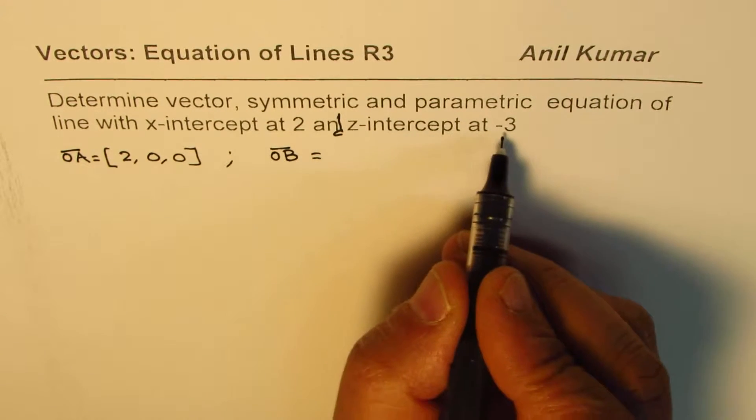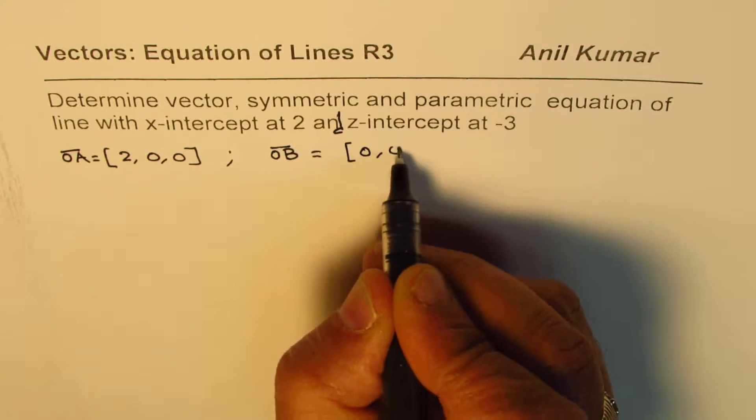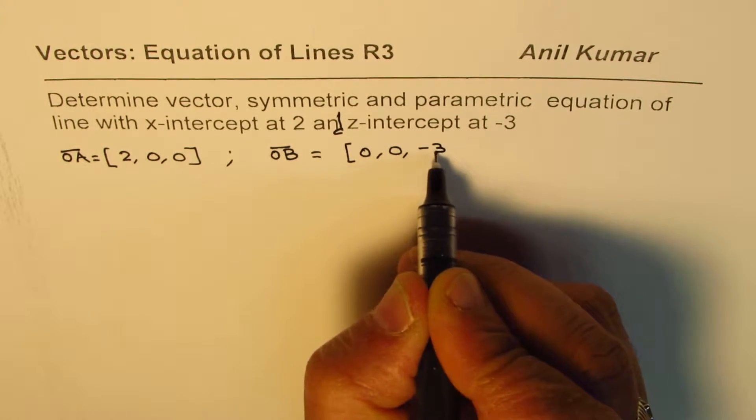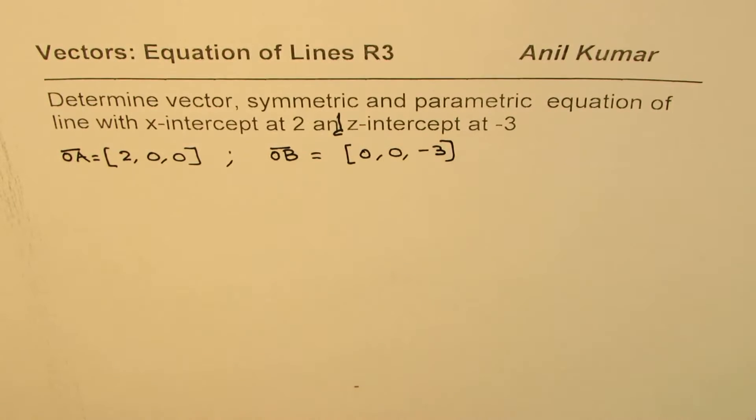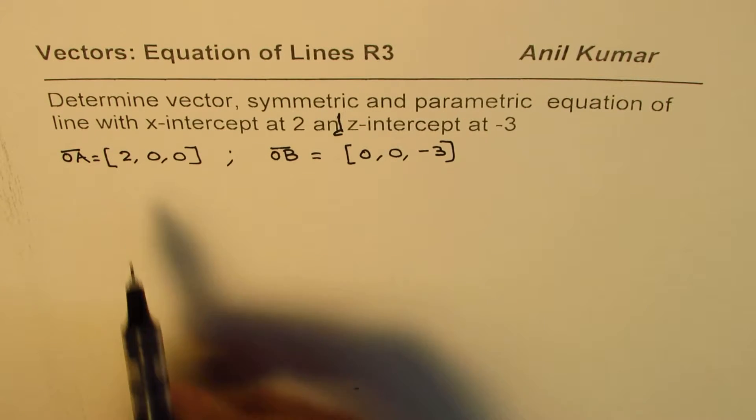OB will be z-intercept is minus 3. So, that gives us (0, 0, -3) as the position vector for z-intercept at minus 3. Now,